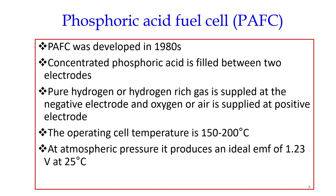For phosphoric acid fuel cells, which was discovered in the 1980s, this configuration has two electrodes — positive and negative — and we need an electrolyte. Here the electrolyte is concentrated phosphoric acid, which is filled between the two electrodes. Pure hydrogen or hydrogen-rich gas is supplied at the negative electrode, that is the anode, and oxygen or air is supplied at the positive electrode or cathode.